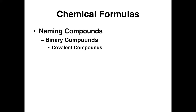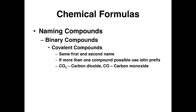Another type of binary compounds are the covalent binary compounds. These are named in a similar way, but the significant difference is that sometimes there is more than one possibility with a covalent compound. You name the first compound by giving its name, and the second ends in -IDE. But if there's more than one possible compound, you use Latin prefixes to differentiate. For example, there are two possible combinations of oxygen and carbon: carbon dioxide, because it has two oxygens, and carbon monoxide.